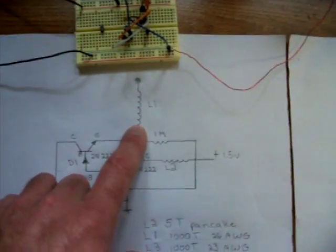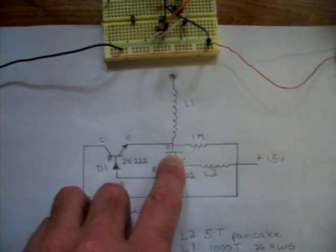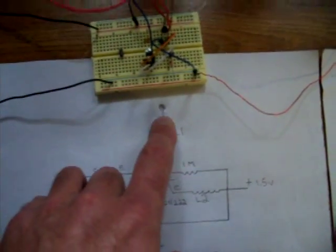This is the main L1 coil, the pancake coil around it. The one end goes right to the base of the first transistor. The other end is free.